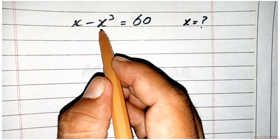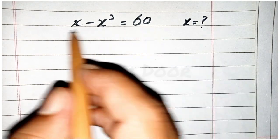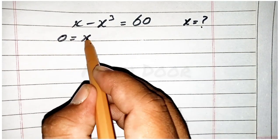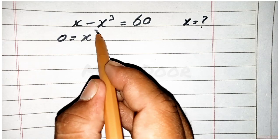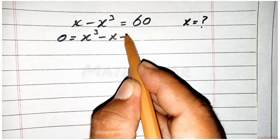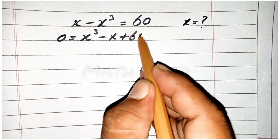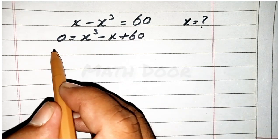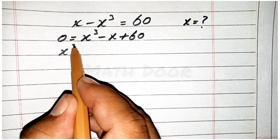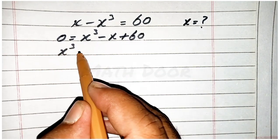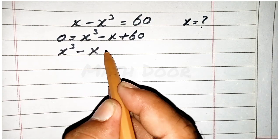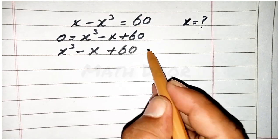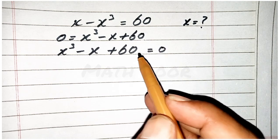Take these two values to the right side of the equation. This becomes 0 is equal to x power 3 minus x plus 60. Now we can write this as x cube minus x plus 60 is equal to 0.